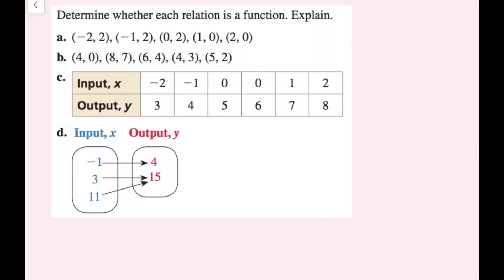We're going to determine whether each relation is a function and explain why. Remember, a function is when each input has exactly one output. For the first example with ordered pairs, I see I have negative two, negative one, zero, one, and two as inputs. I never have a situation where one input goes to multiple outputs, so I know that this is a function.